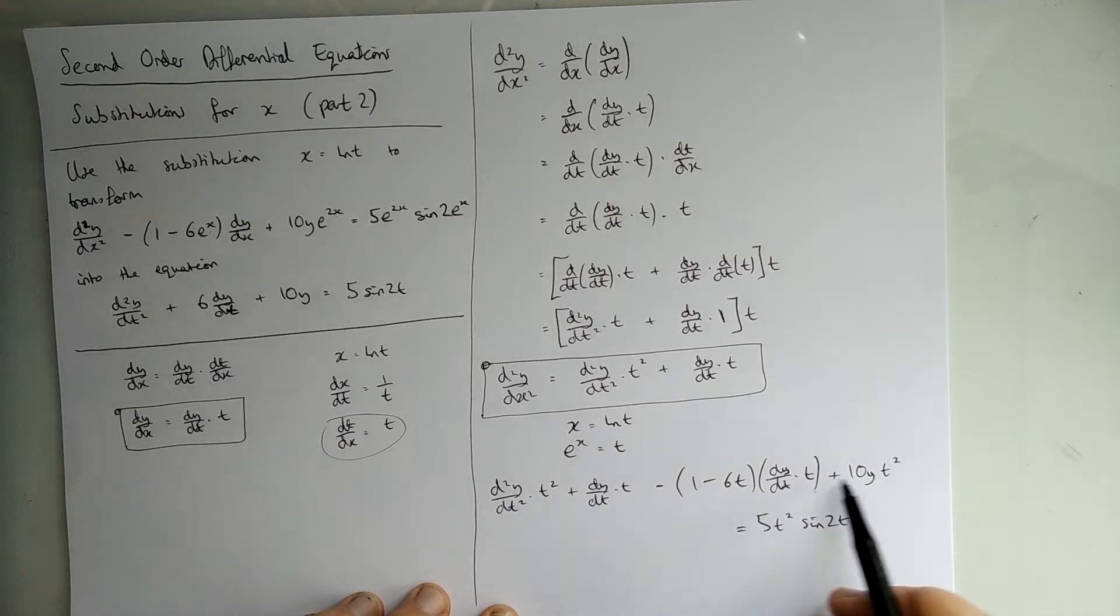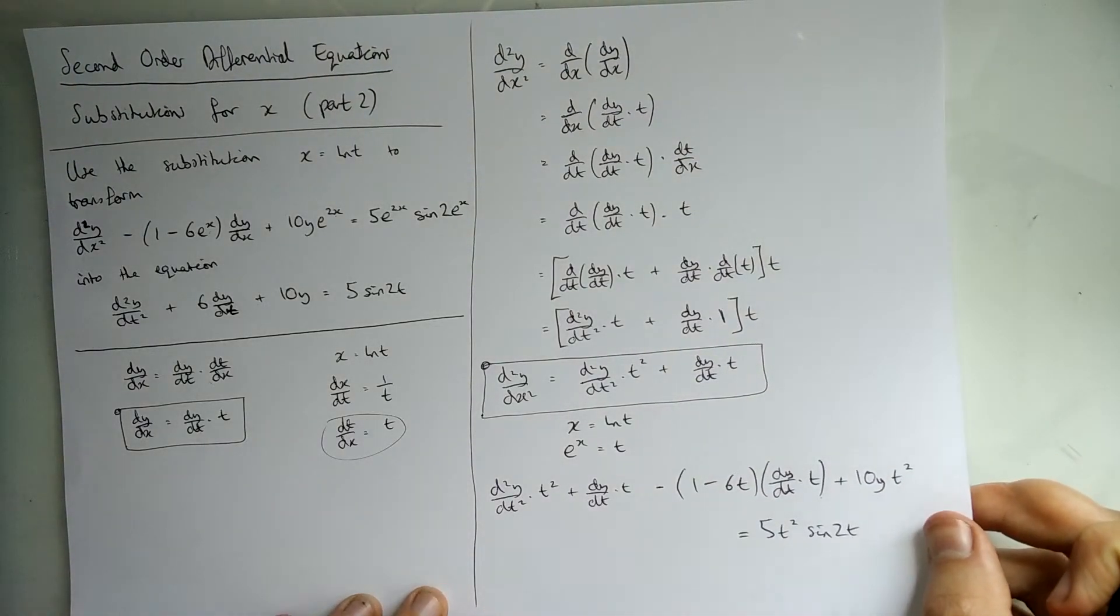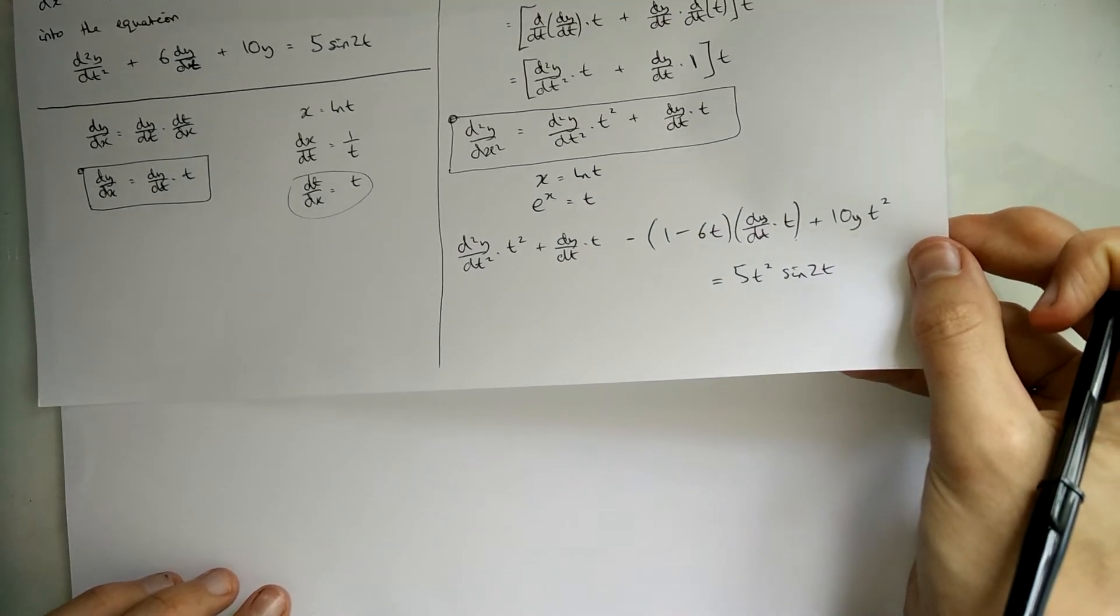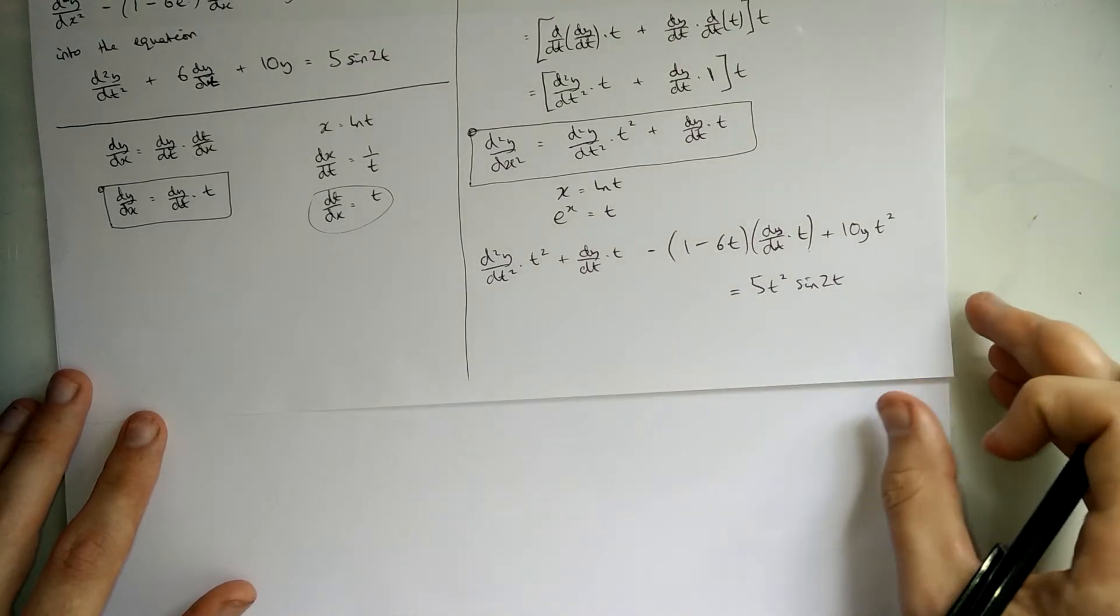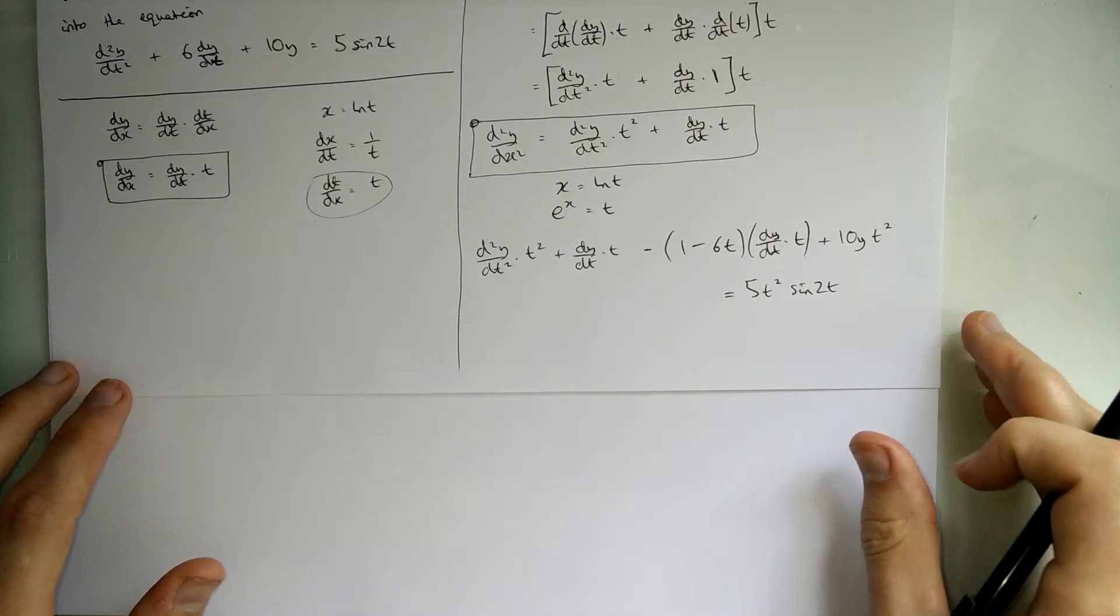So, let's expand this bit here out and see how this bit's going to cancel and we're going to be left with this t² that cancels out. To do that, I'm just going to slide this page up so we've got more space to work with.